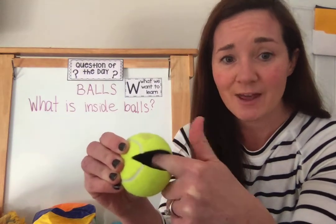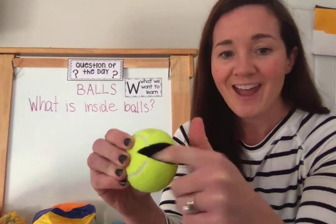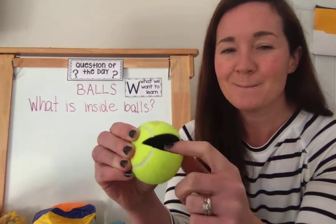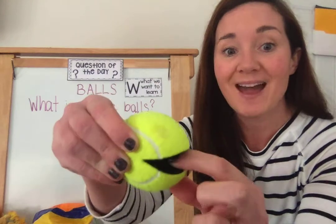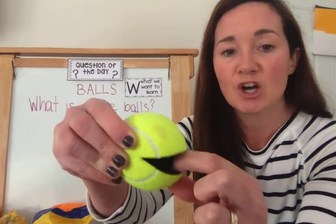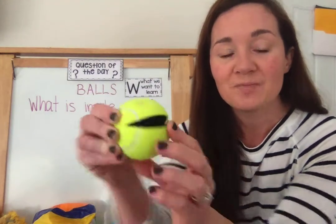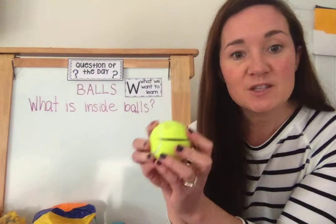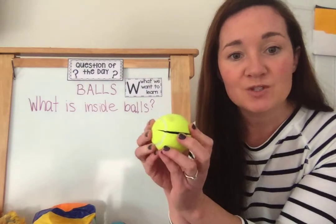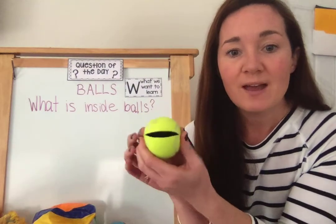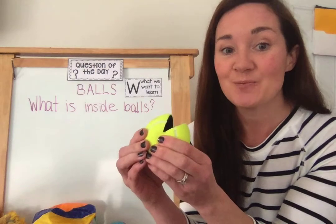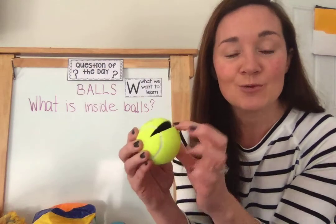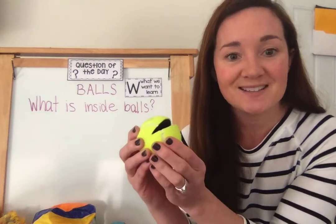There is something on the outside edge of the ball that's black and hard — it's rubber, and the rubber helps the ball bounce. So inside this ball is air because it's hollow, and rubber around the outside to help it bounce.